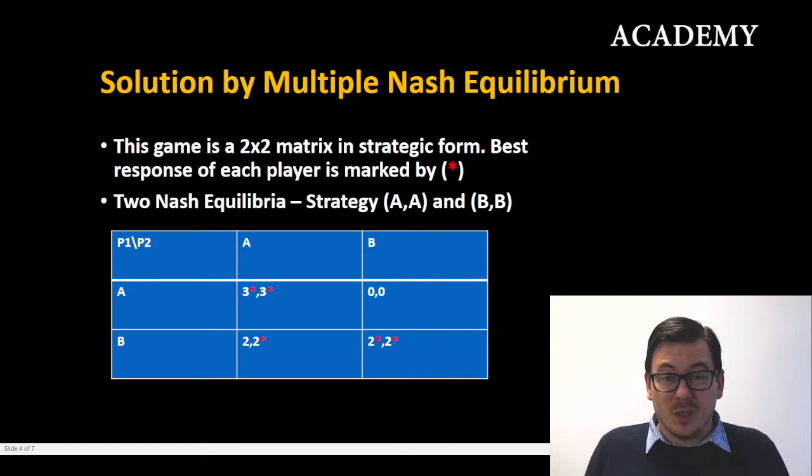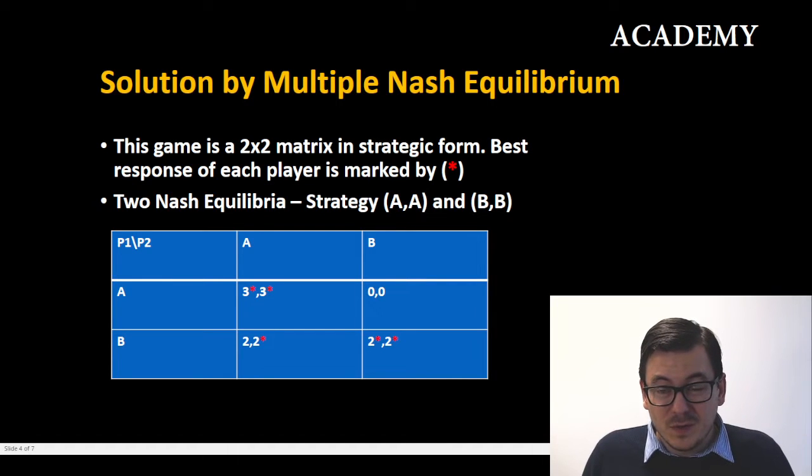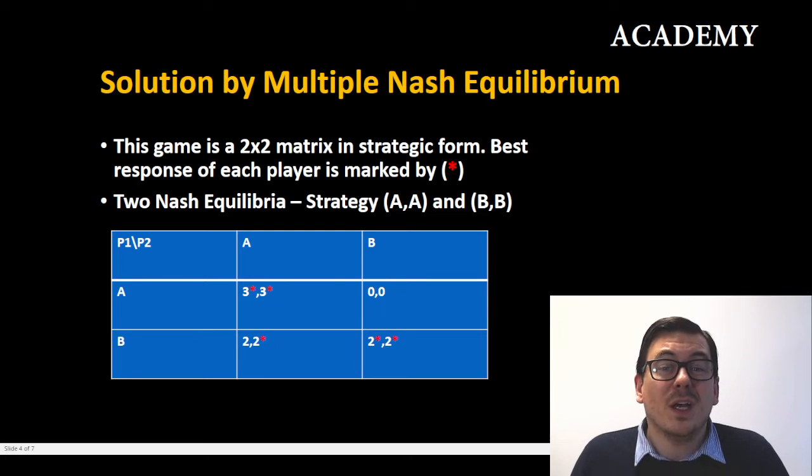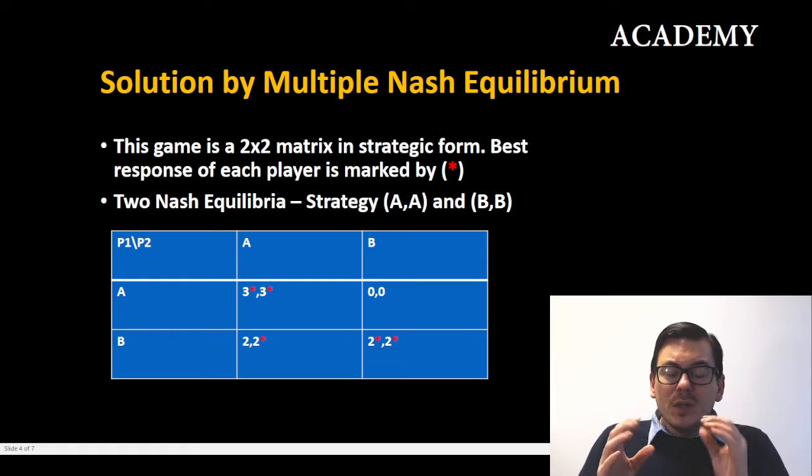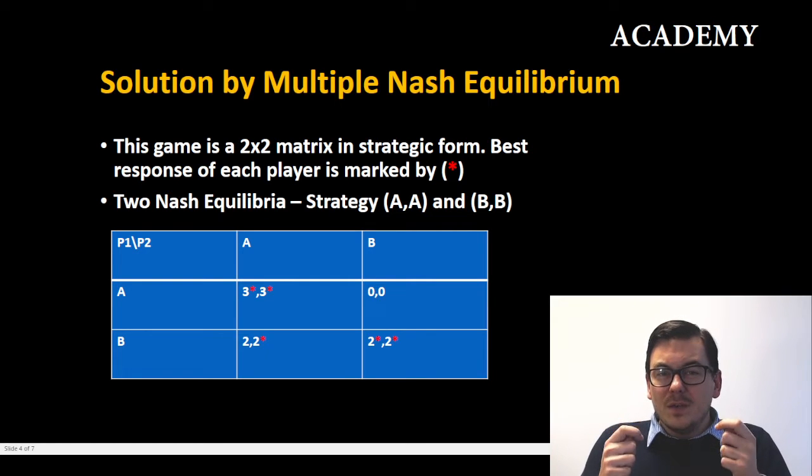So let's look at a game where we have multiple Nash equilibrium. I've marked all the best responses with a red star in this two by two matrix in strategic form. And thereby when we look at these best responses, we know that when we have two best responses, two stars, then there is a Nash equilibrium present. So here you can see that we have two Nash equilibria: strategy (A,A) and strategy (B,B).